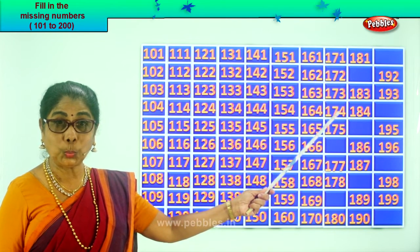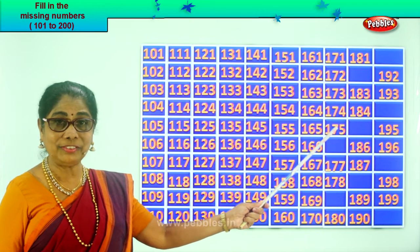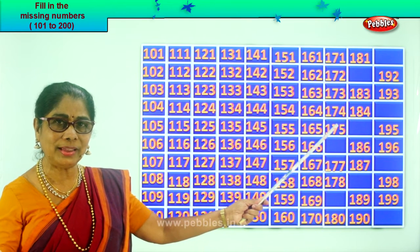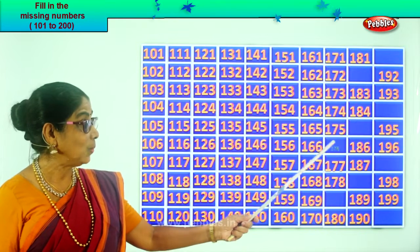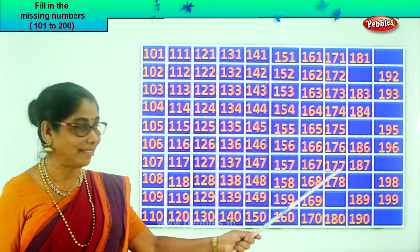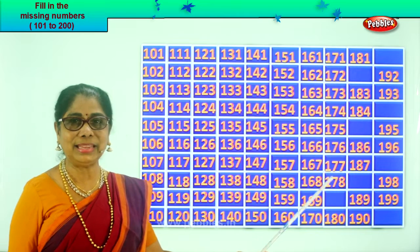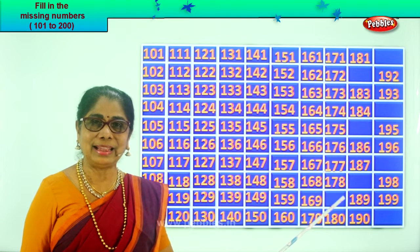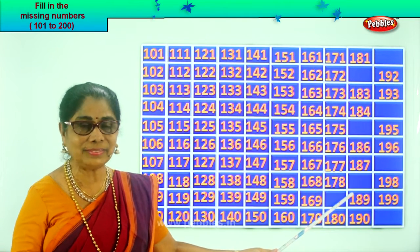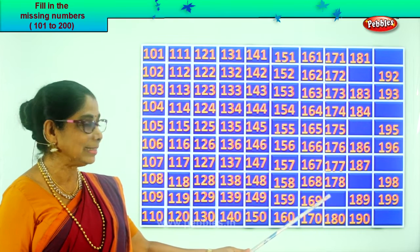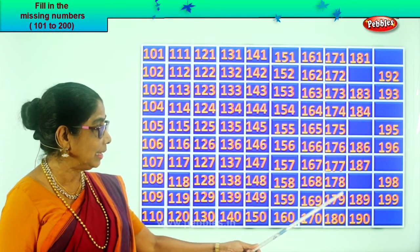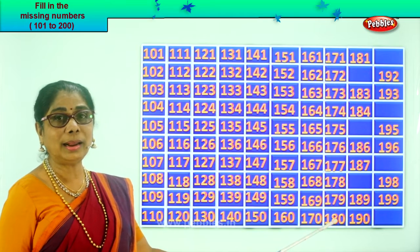174, 175. After 5, 6. After 75, 76. 176. 177, 178. After 8, 9. After 78, 79. So 179. We write 179. 180.